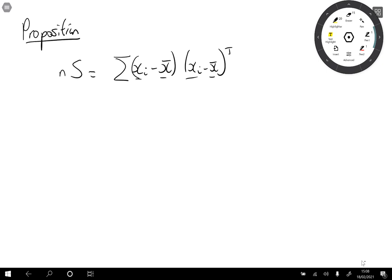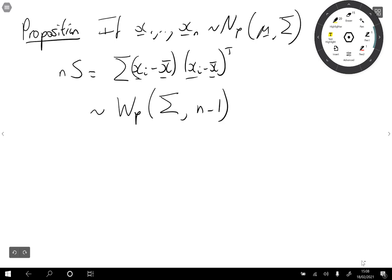So what I'll prove is that if x1 up to xn are multivariate normal p dimensions with mean mu and covariance matrix sigma, then n times S has a Wishart distribution in p dimensions with variant matrix sigma and n minus 1 degrees of freedom.